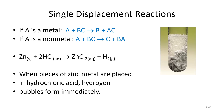Here's an example of single displacement. You can see there are two reactants and two products, so we can automatically eliminate this being a combination or decomposition reaction. Since we have a lone element bumping out something and leaving a lone element, this is a single displacement. In this case, zinc is bumping out the hydrogen and leaving the hydrogen by itself.